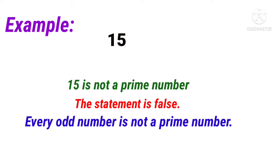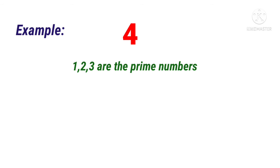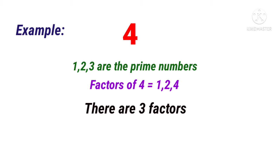Eighth sum: each of the composite numbers has at least three factors. Justify this statement with an example. I will take the number 4, since 1, 2, and 3 are prime numbers. The factors of 4 are 1, 2, and 4 – so there are totally 3 factors. Therefore, the statement is true.